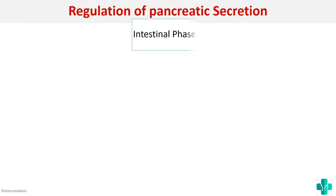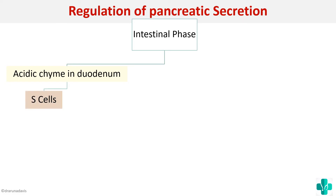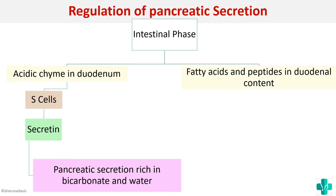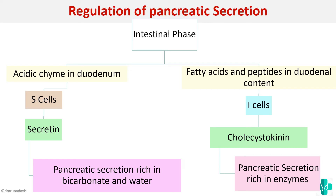In the intestinal phase, when acidic chyme reaches the duodenum, the S cells are stimulated and produce secretin, which causes pancreatic secretion that is rich in bicarbonate and water because it acts on the duct cells. Meanwhile, fatty acids and peptides in the duodenal content stimulate the I cells, which produce cholecystokinin, resulting in pancreatic secretion that is rich in enzymes.